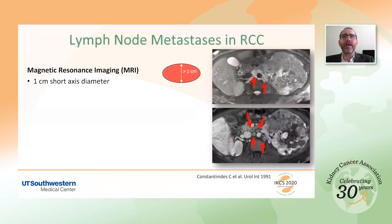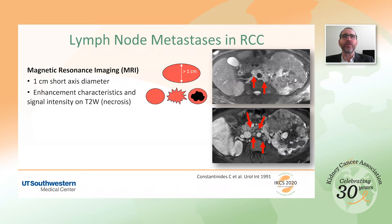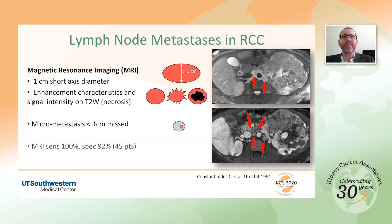MRI is being used more commonly for staging renal tumors, and the criteria are the same as for CT: size greater than 1 cm in short axis. We can also appreciate suspicious morphologic features and necrosis. However, MRI has the same challenges as CT — we miss micrometastasis. Although some reported sensitivity and specificity look better for MRI than CT, this is based on older literature and relatively small series. Larger studies with current technology are necessary to assess CT and MRI diagnostic performance.